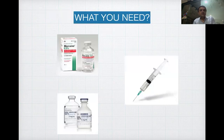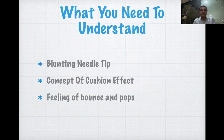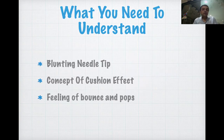What you need is local anaesthetic drug, syringe, and a needle. You can give this block even with a hypodermic needle or spinal needle in obese patients without spending too much money. To give an excellent LR block, you need to understand how to blunt the needle tip when using a hypodermic or spinal needle, the concept of cushion effect, and how to feel bounce and pops in the LR technique.